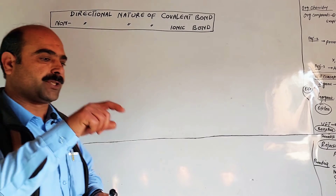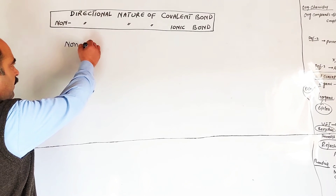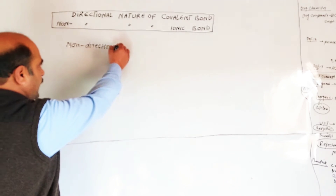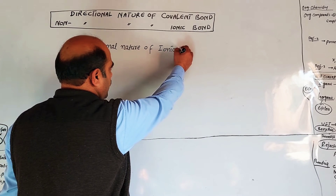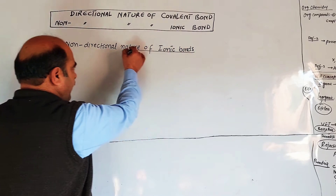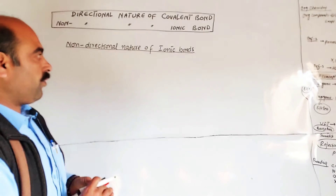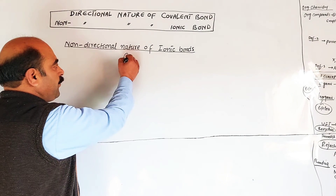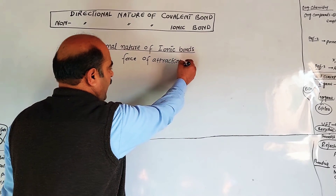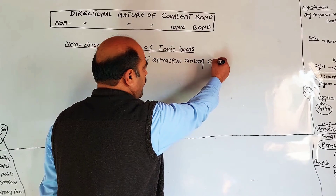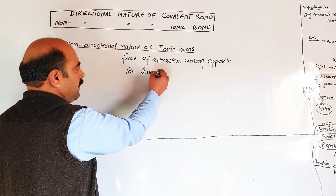First, we will discuss the non-directional nature of ionic bond. Ionic bonds are non-directional. The reason is that the force of attraction among oppositely charged ions lies in all directions.